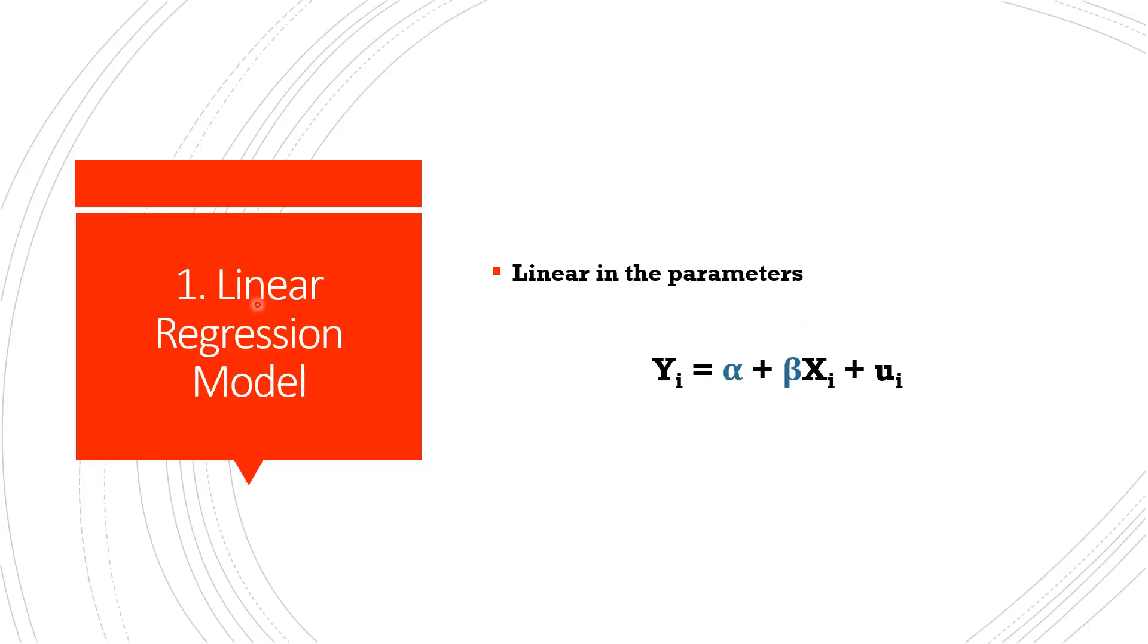The very first assumption is linear regression model. It means that the model should be linear in the parameters, though it may or may not be linear in the variables. But it is very important that the alpha and beta, which are the intercept and the slope coefficients, they must be linear in their form while xi or yi can be nonlinear.